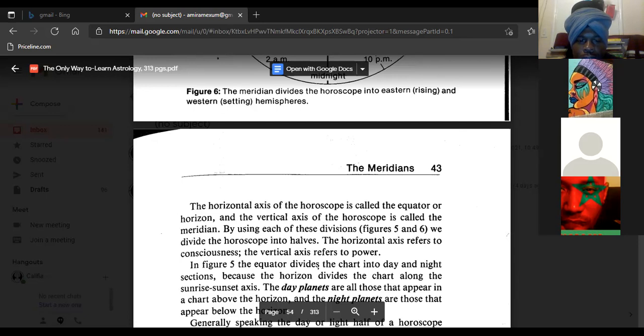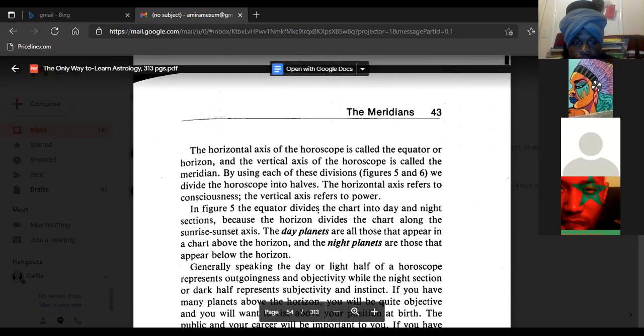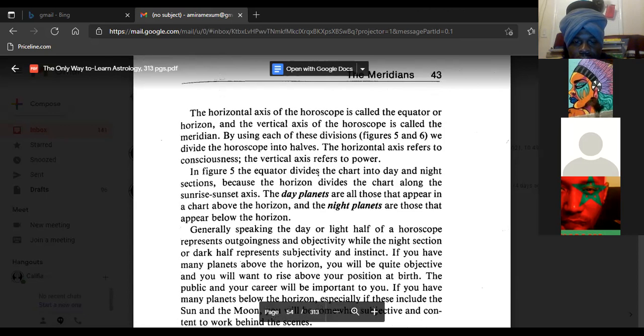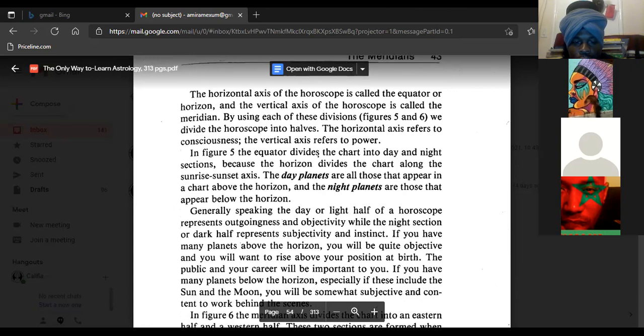By using each of these divisions, figure five and six, we divide the horoscope into halves. The horizontal axis refers to consciousness; the vertical axis refers to power. In figure five, the equator divides the chart into day and night sections. Generally speaking, the day or light half of a horoscope represents outgoingness and objectivity, while the night section or dark half represents subjectivity and instinct. If you have many planets above the horizon, you will be quite objective and will want to rise above your position at birth.